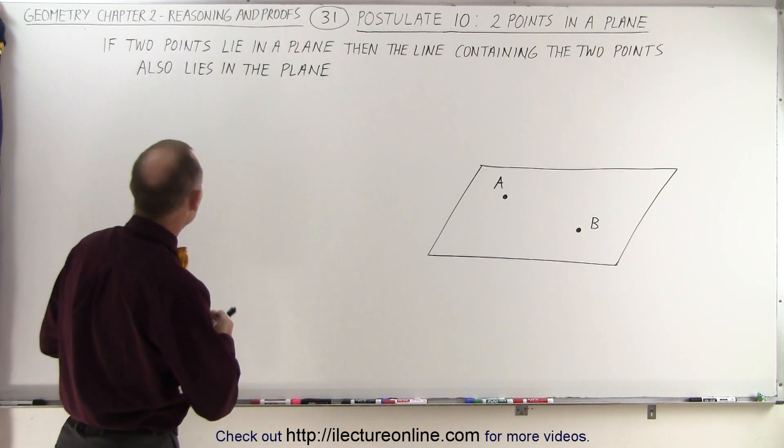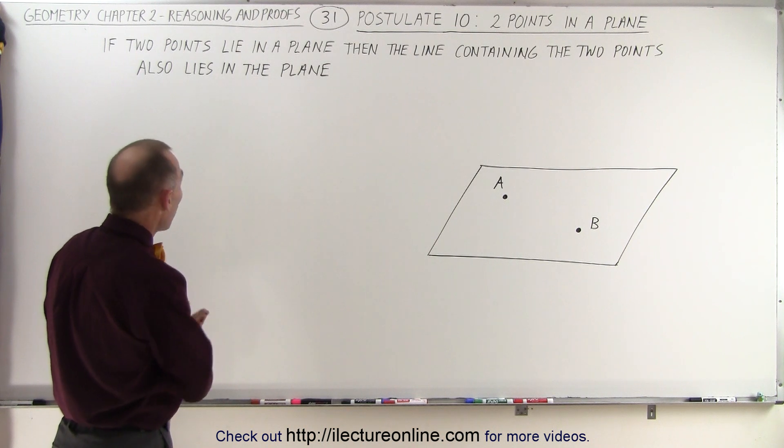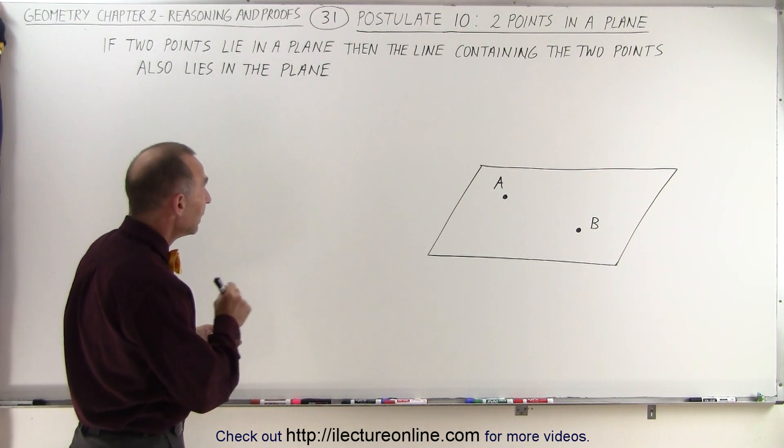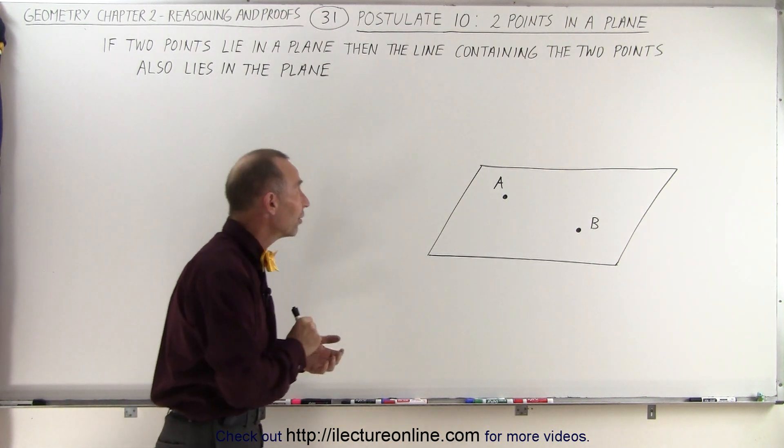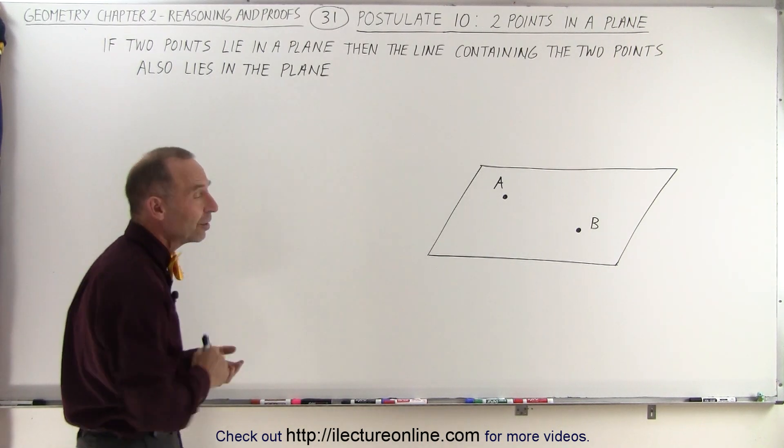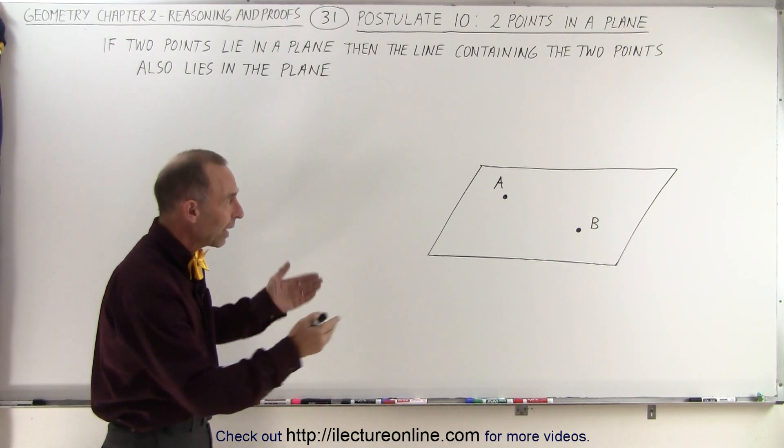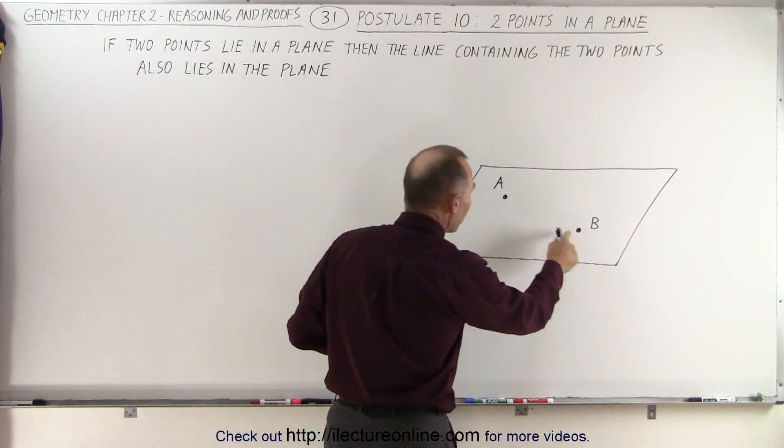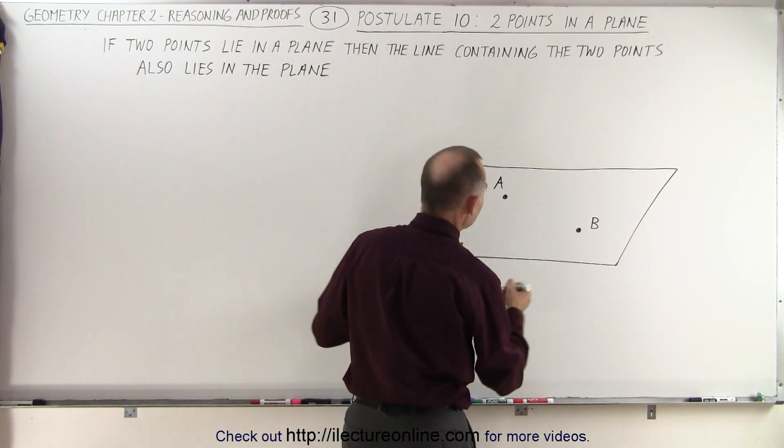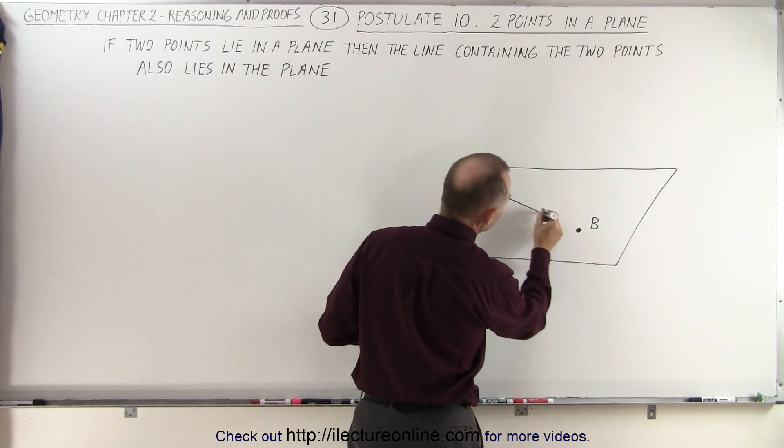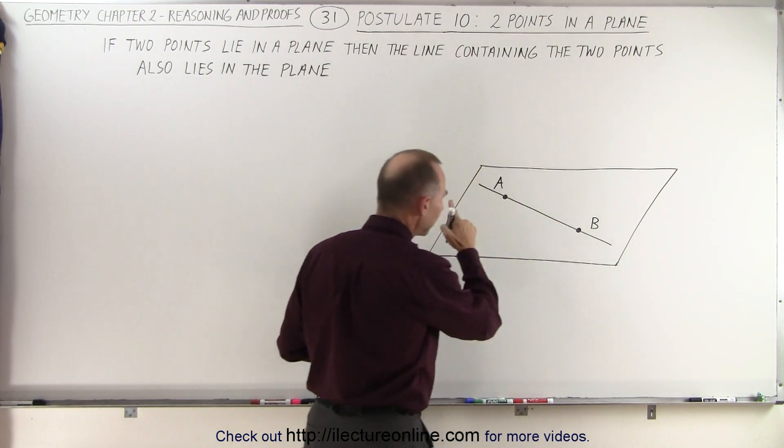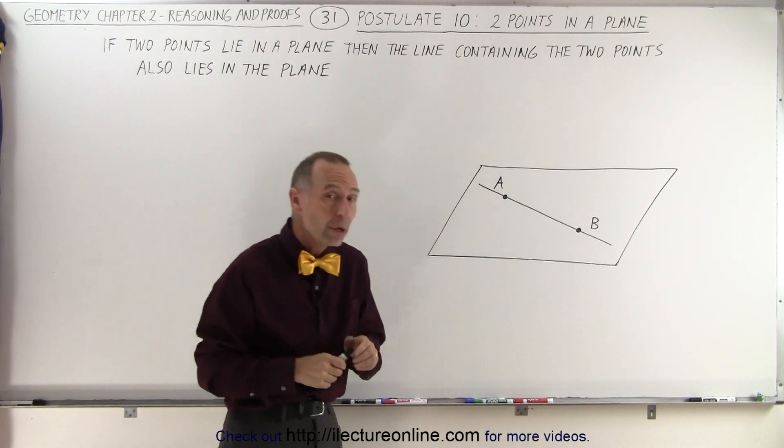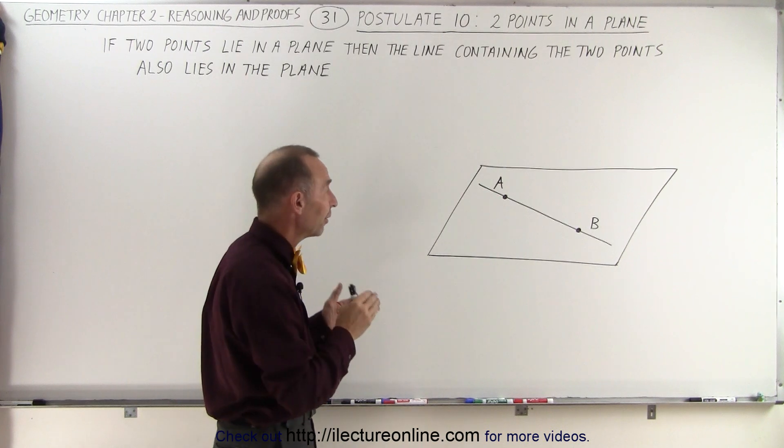Here we have defined that if two points lie in a plane, then the line containing those very same two points also lies in the plane. So here we have a plane that contains points A and B. If we now connect those two points with a line, that line is now also contained in that very same plane.